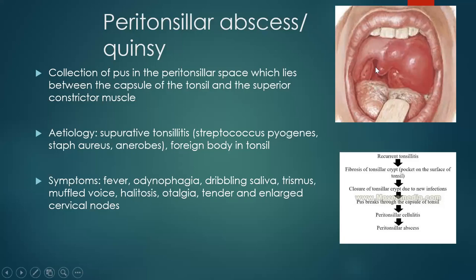As you can see in the image, this is the tonsil with the anterior and posterior pillars. We can clearly see bulging involving the soft palate and uvula, with medialization of the tonsil. The etiology of Quincy is usually suppurative or recurrent tonsillitis, and it is polymicrobial — including Streptococcus pyogenes, Staphylococcus aureus, group A beta-haemolytic Streptococcus, and anaerobes — as well as foreign body in the tonsil.